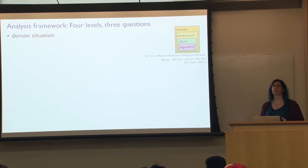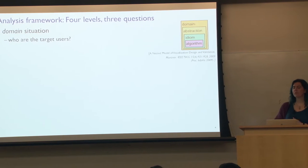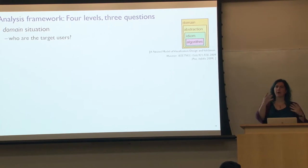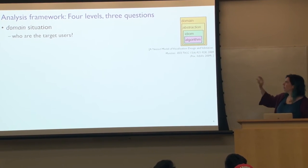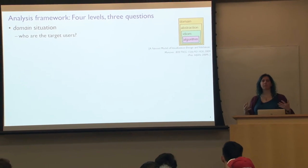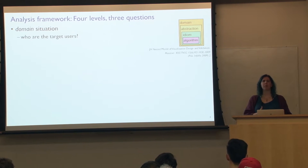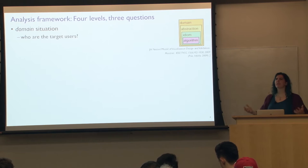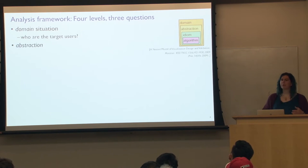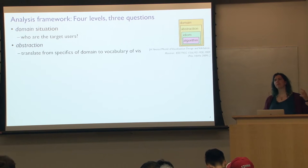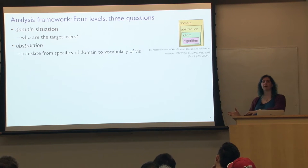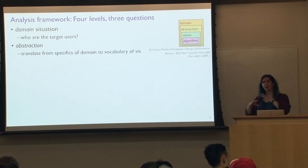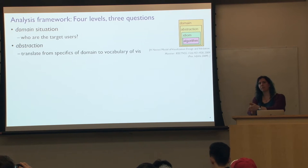The first level is the domain situation: who are the target users and what are their characteristics? Are they experts in a particular field with domain semantics for representing data? What problems are they trying to solve? What are the characteristics of their data? To avoid making one-off solutions for every individual domain problem, we need a way to go from domain concerns to things that cross-cut different application domains — that's what I call the abstraction level.